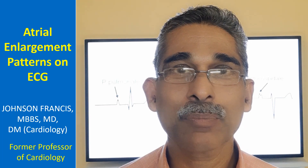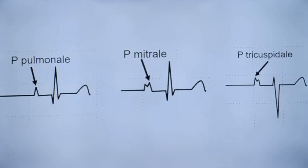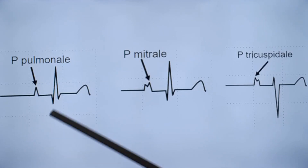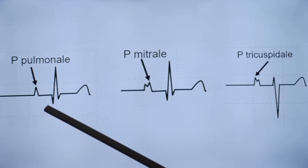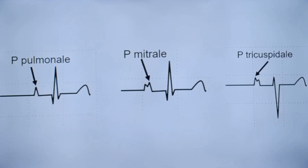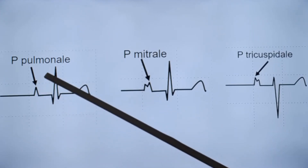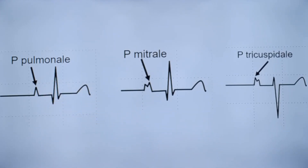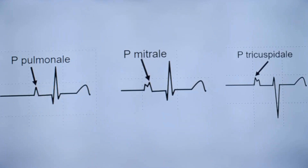The P pulmonale pattern is seen in right atrial overload. It presents as tall, peaked, sharp P waves with a narrow width. When the width of the P wave is increased, it indicates left atrial enlargement. When the height or amplitude is increased, it indicates right atrial enlargement — this is P pulmonale.